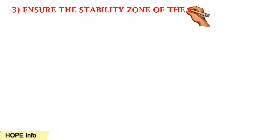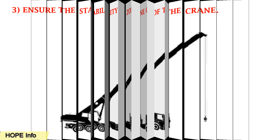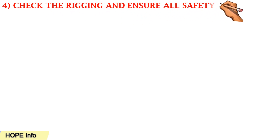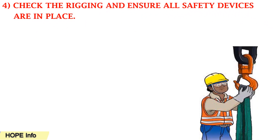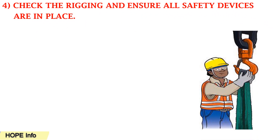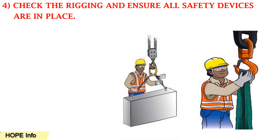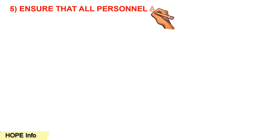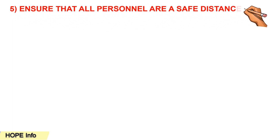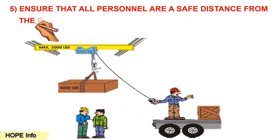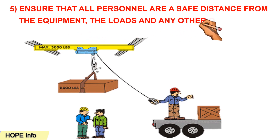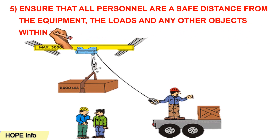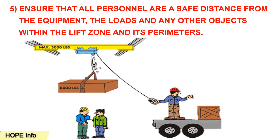The third tip is to ensure the stability zone of the crane. The fourth tip is to check the rigging and ensure all safety devices are in place — make sure to check all parts of the rigging like slings and chains. The fifth tip is to ensure that all personnel are a safe distance from the equipment, the loads, and any other objects within the lifting zone and its perimeter.